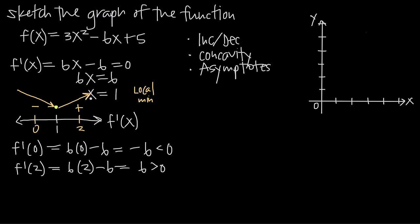Because x = 1 was the only critical point we identified, we can also say it is a global minimum of the function. Whenever you find just one critical point, you can determine that it is a global minimum or global maximum. In this case, x = 1 represents the global minimum. Now let's talk about concavity.